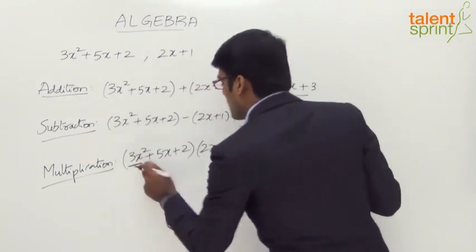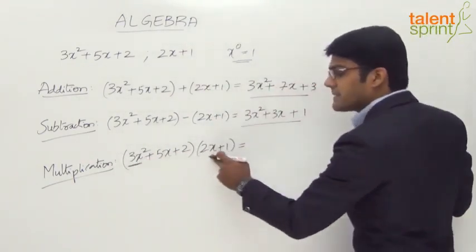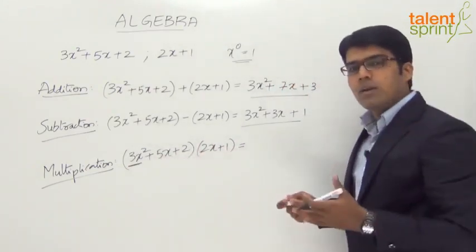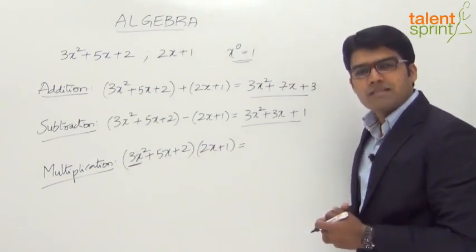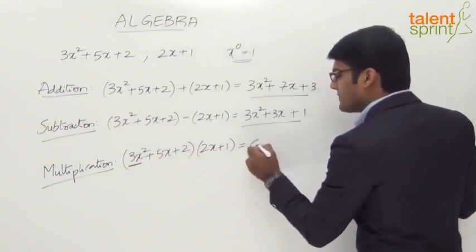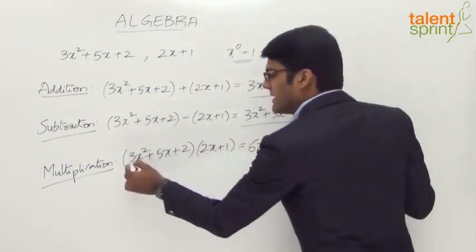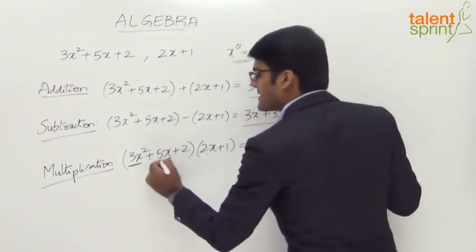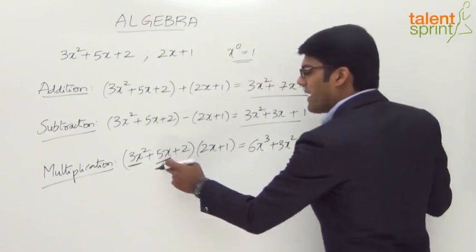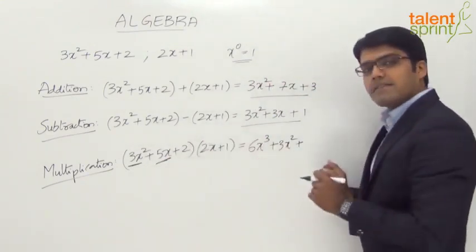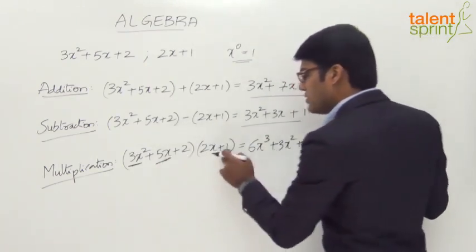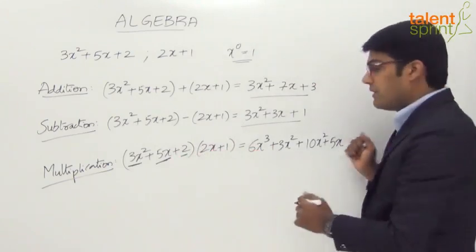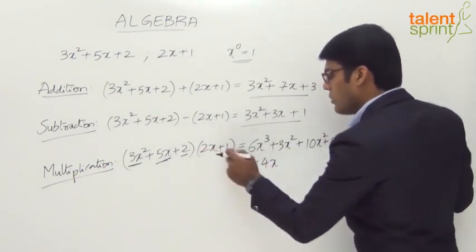Let us multiply 3x squared with 2x and 1. 3x squared into 2x: 3 into 2 is 6, and x squared into x — since the bases are equal in multiplication, the powers are added — gives x cubed. So 3x squared into 2x is 6x cubed. Then 3x squared into 1 is 3x squared. Now the second term, 5x: 5x into 2x gives 10x squared, and 5x into 1 gives 5x. Finally the constant 2 must be multiplied with 2x plus 1: 2 into 2x is 4x, and 2 into 1 is 2.